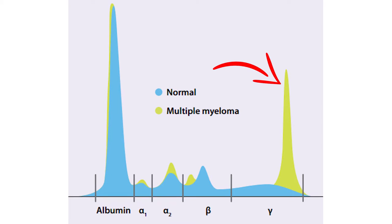Or you can detect a spike, and that's where you have too much of a specific clonal protein derived from these clonal plasma cells.